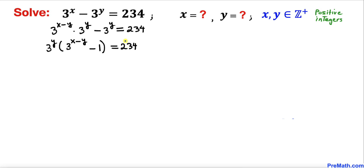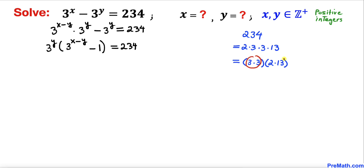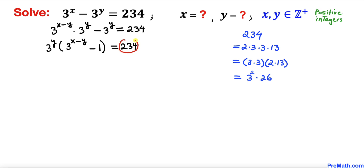Now let's focus on the number 234 on the right-hand side. Its prime factorization is 234 equals 2 times 3 times 3 times 13. Rearranging, we put 3 times 3 together and 2 times 13 together. So 3 times 3 becomes 3^2, and 2 times 13 becomes 26, giving us 3^2 times 26.